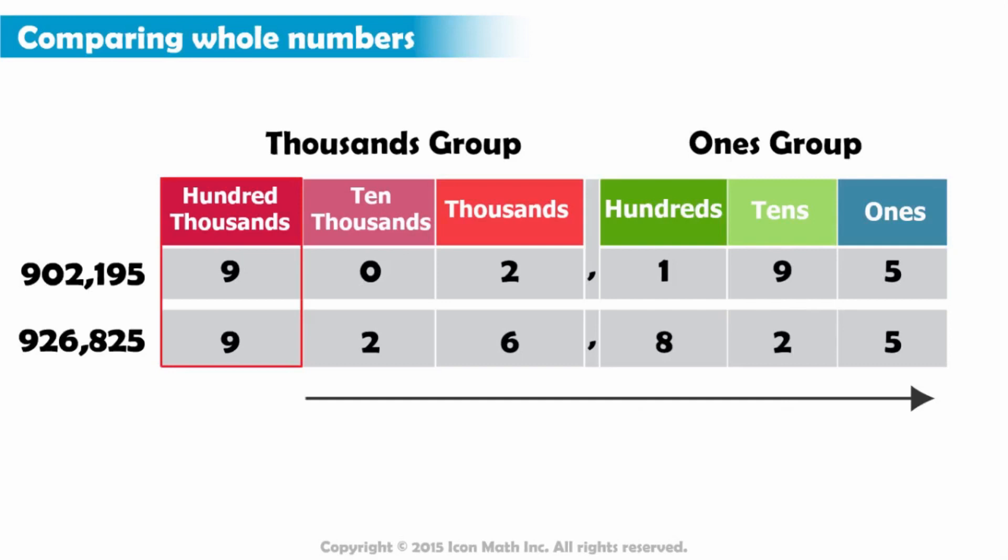We have to compare the digits in the next highest place value. So, we move to the ten thousands. In this place, we have zero in the first number and two in the second number.